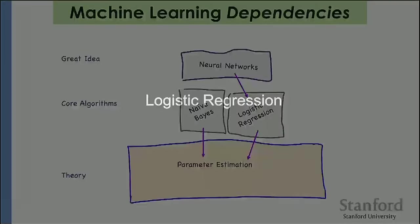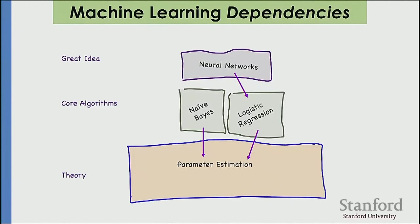Logistic regression is a very simple algorithm for making a classification prediction that is going to be very impactful, because it is, in fact, the heart and soul of deep learning. If you've heard of neural networks or deep learning, it is a bunch of logistic regressions put on top of each other. So learn logistic regression — it is critically important.